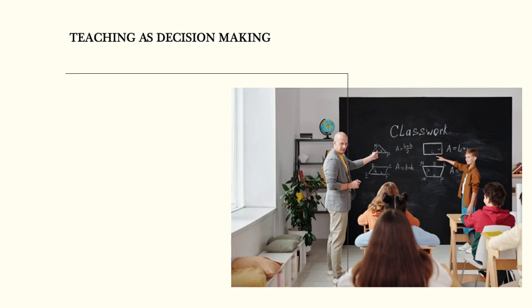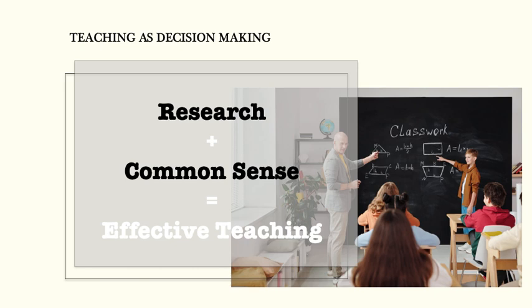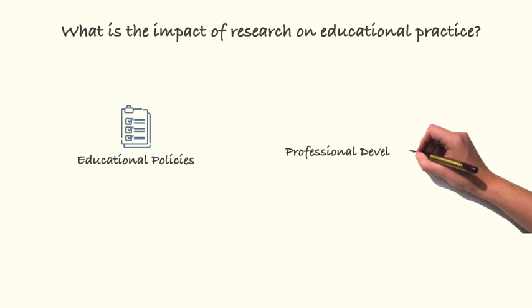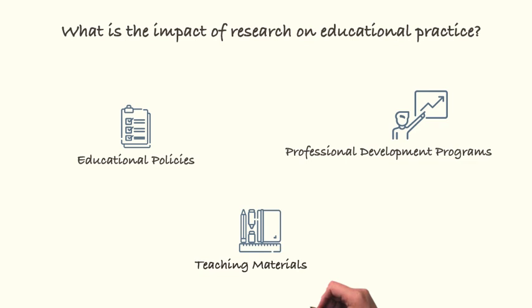Research in educational psychology provides you with the information to help you make good decisions. However, there is no theory, no research, no book that can tell you exactly what to do in a given situation. Making the right decision depends on many factors, such as the context of the problem and the objectives you have in mind. Therefore, besides research, you need to use common sense. Whether teachers are aware of it or not, research in educational psychology has a significant impact on educational practice — reflected in educational policies, professional development programs, and teaching materials.